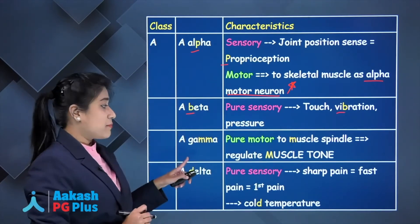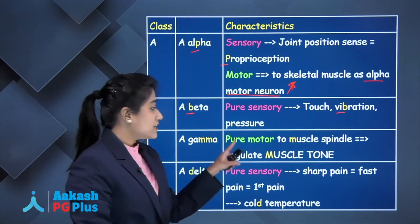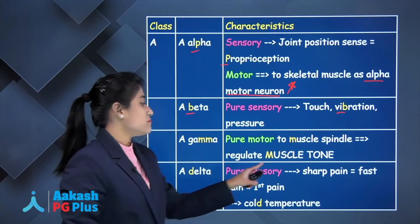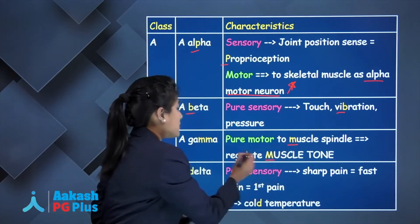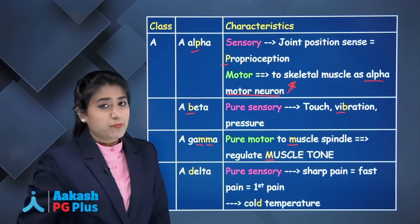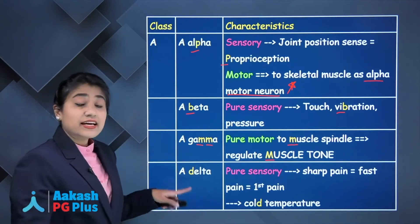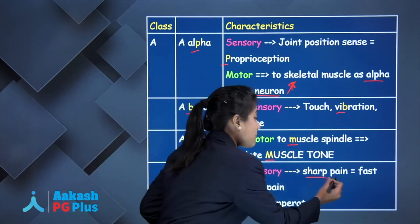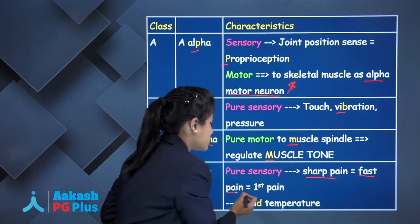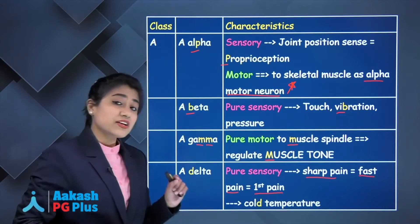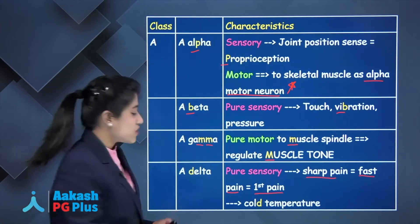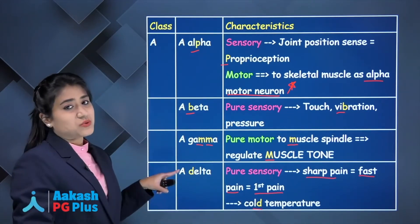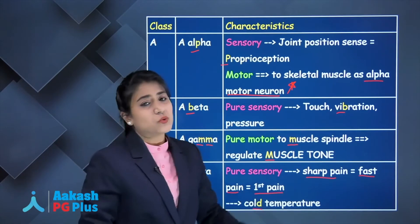A-gamma is pure motor and supplies the muscle spindle, regulating muscle tone — remember 'muscle spindle, muscle tone is gamma.' A-delta is pure sensory, carrying sharp pain (also called fast pain or first pain) and cold temperature. Delta starts with D, and cold is D, so A-delta carries cold temperature.